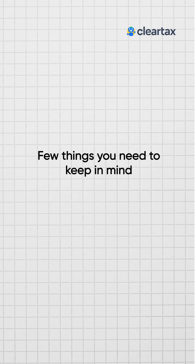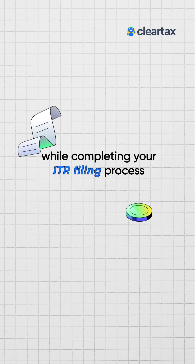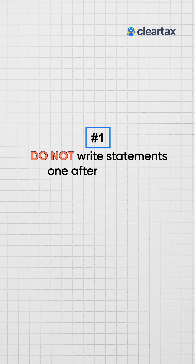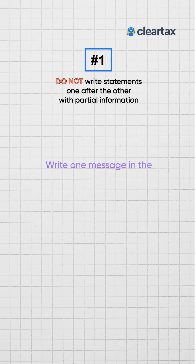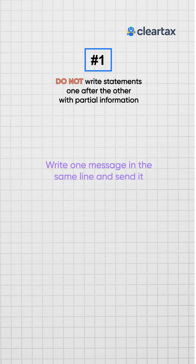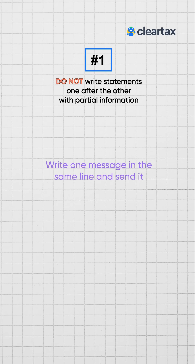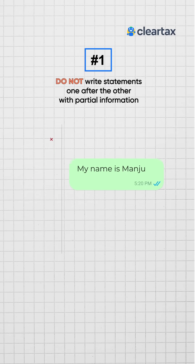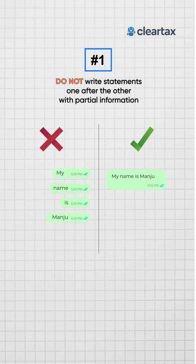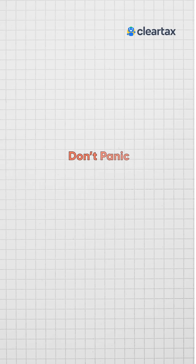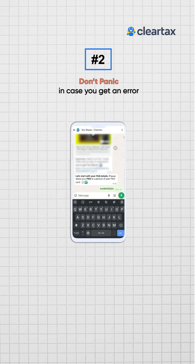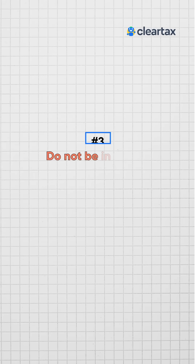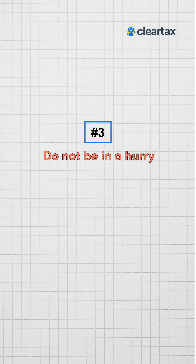Here are a few things to keep in mind while completing your ITR filing process. First, do not write statements one after the other with partial or incomplete information — write one complete message in the same line and send it. For example, write 'my name is Manju' all at once instead of in separate sentences. Second, don't panic if you get any error — just follow the next steps and instructions on the screen. Third, don't be in a hurry and please be very patient throughout the entire process.